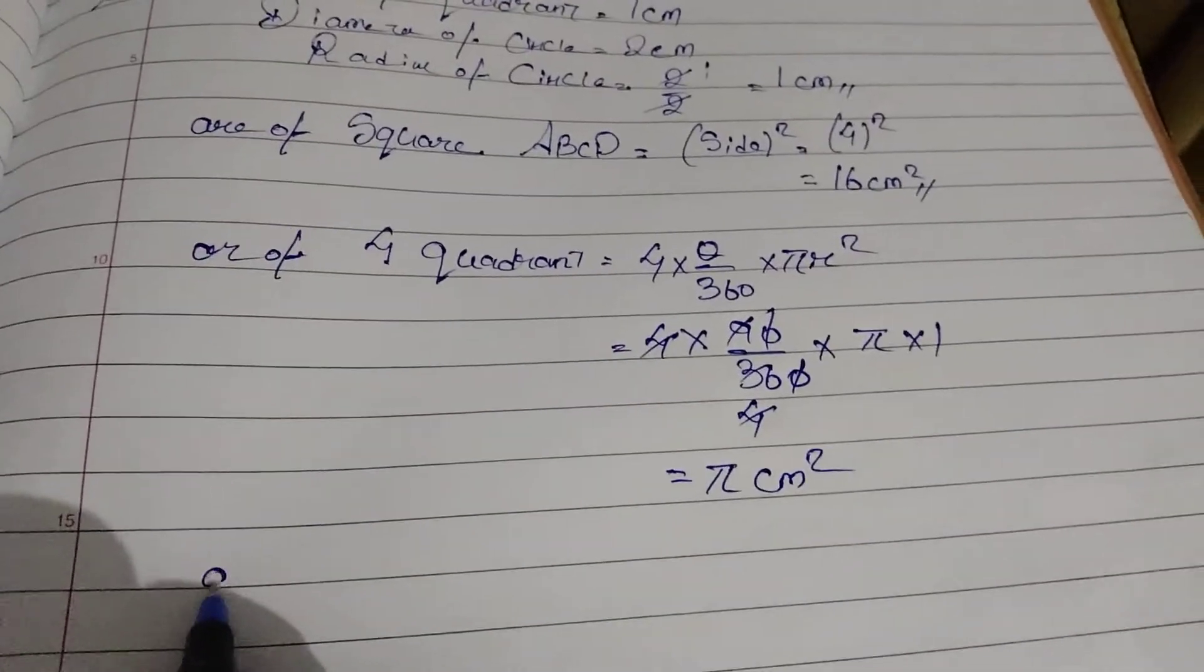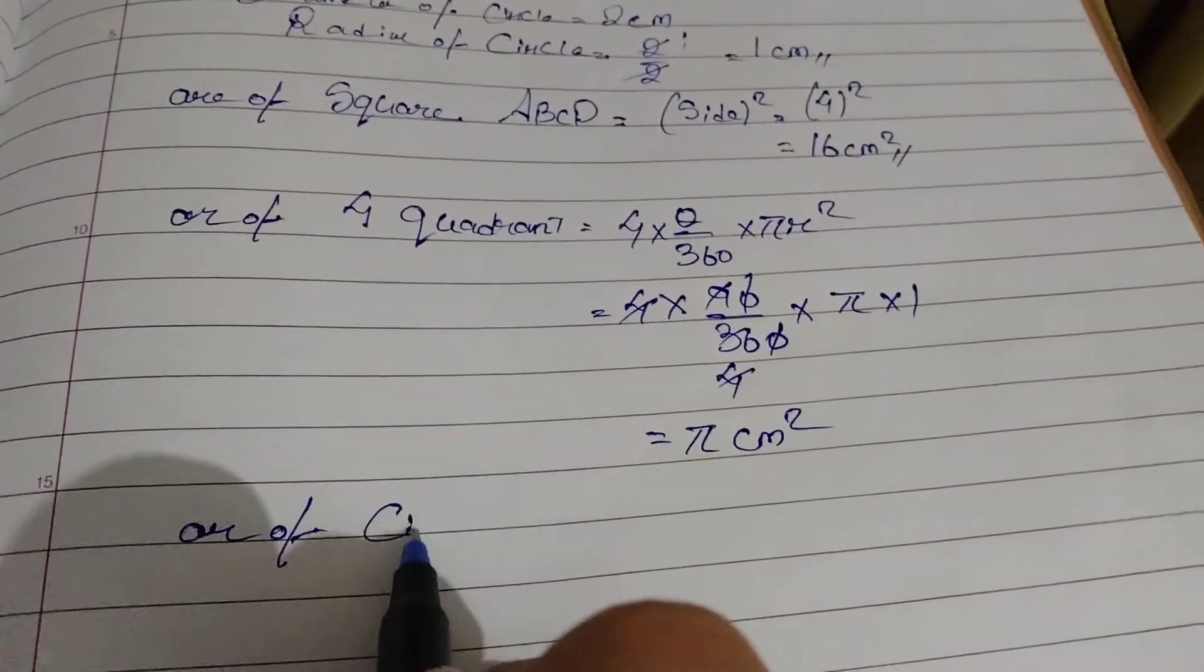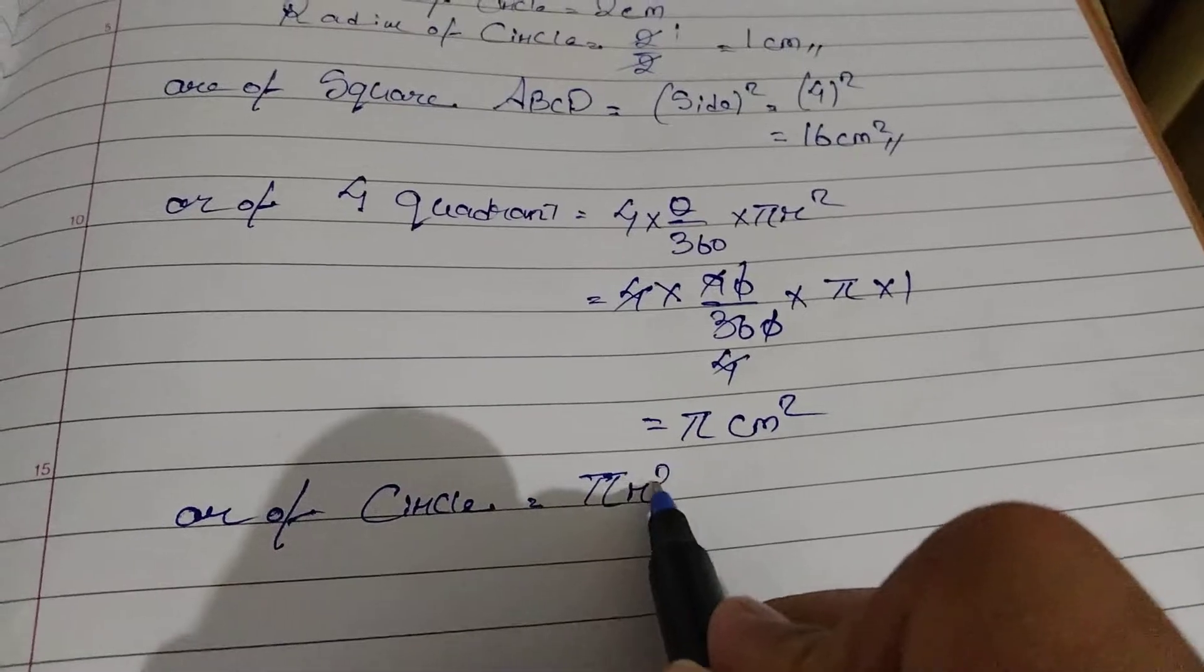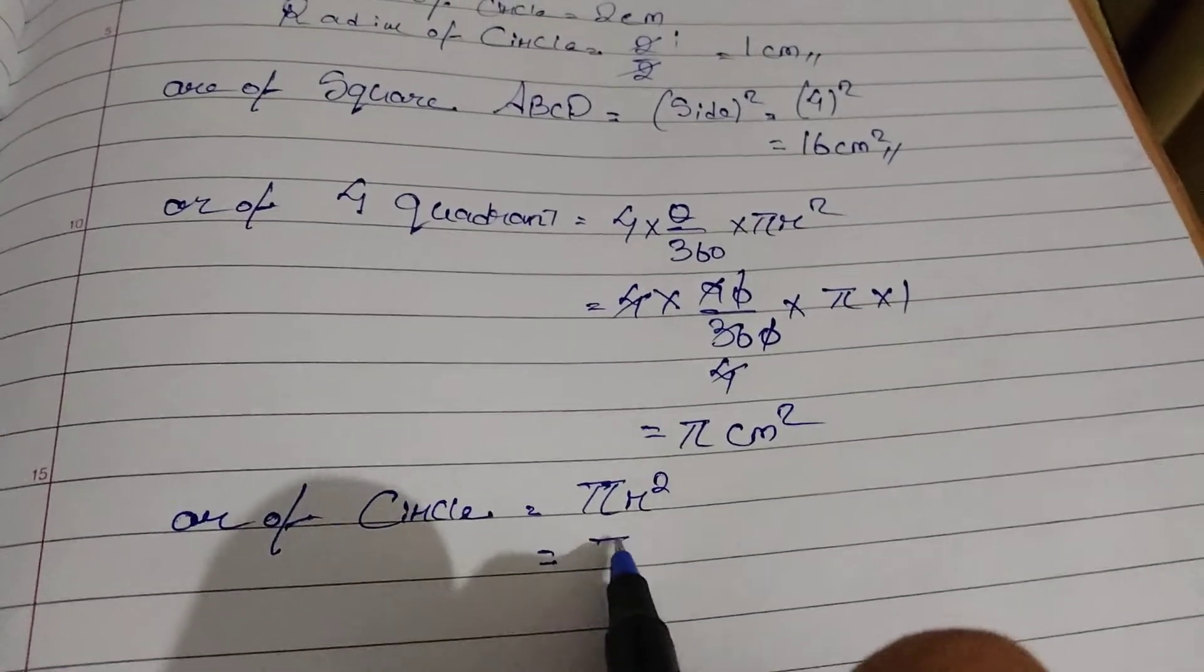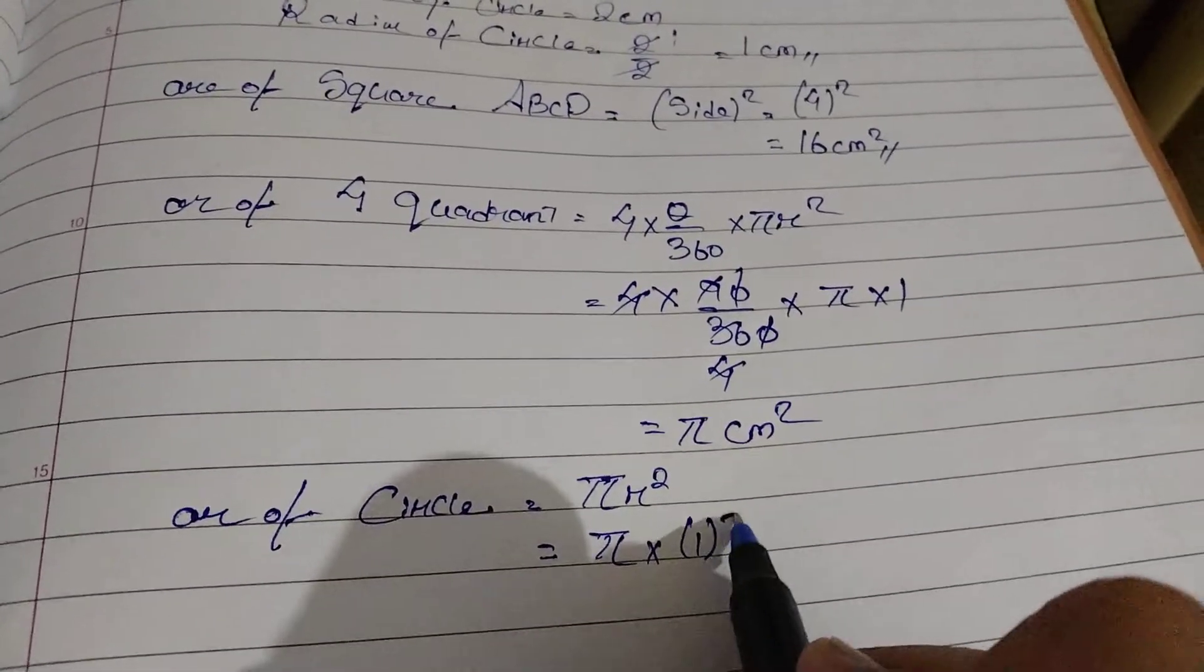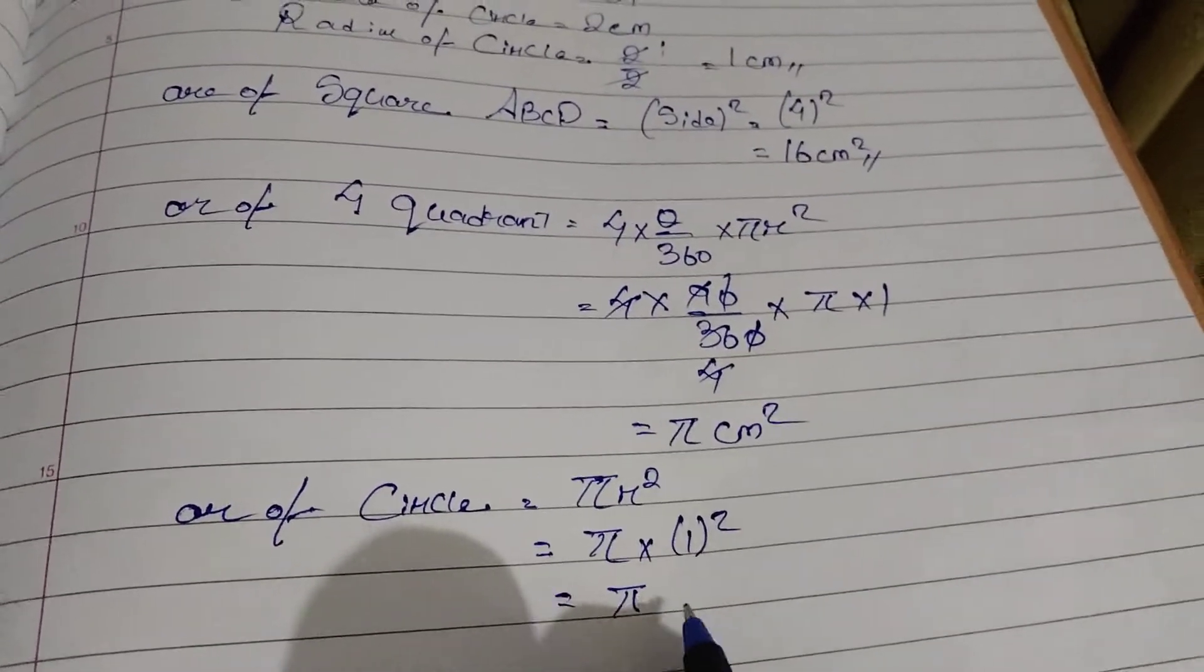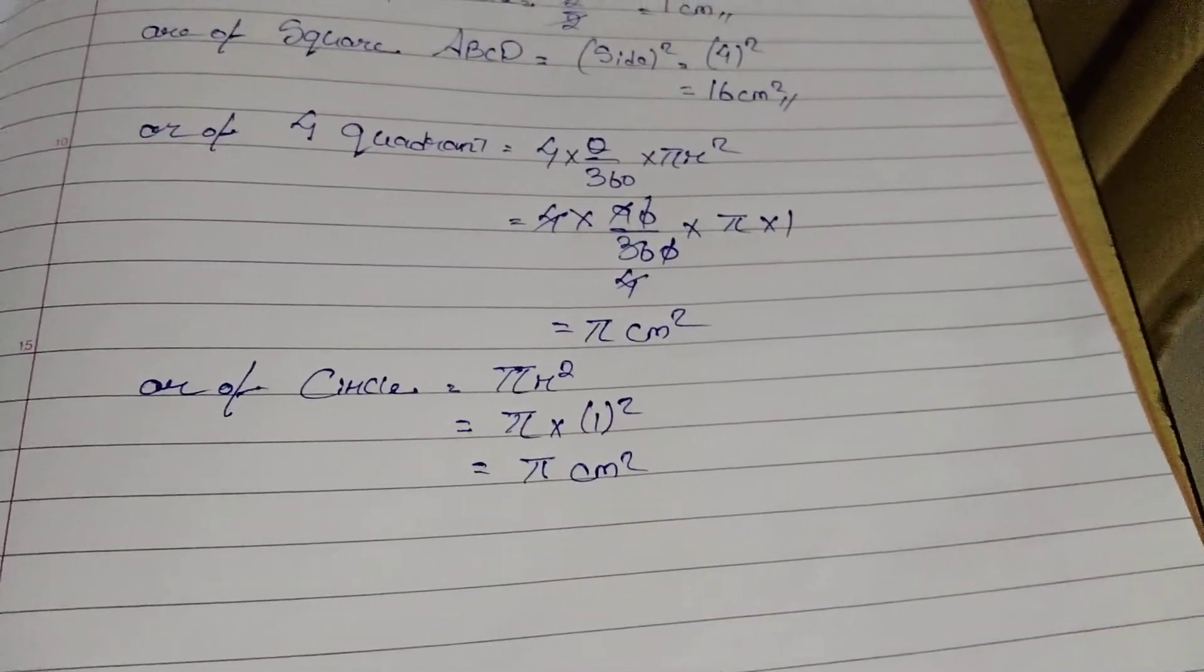Finally, area of circle. Area of circle is pi r square. Pi into r is 1 square. So, 1 into 1 is 1. Pi into 1 will be pi, so we get pi cm square.